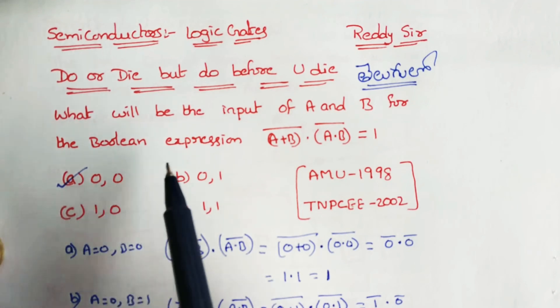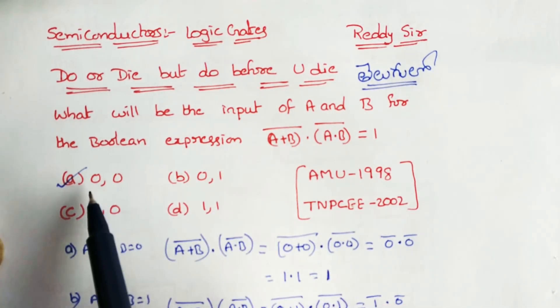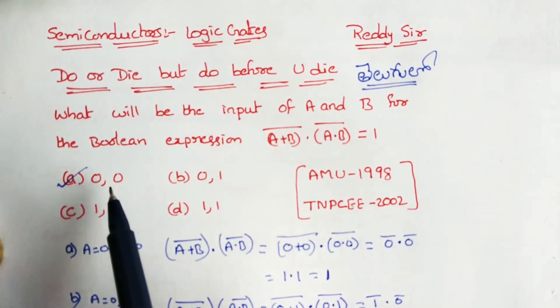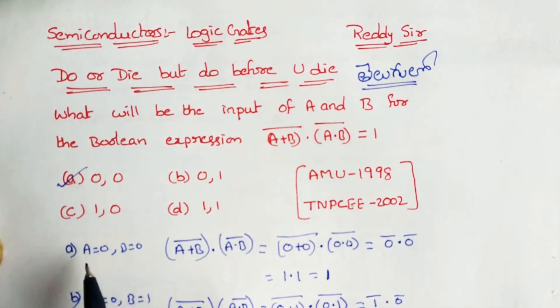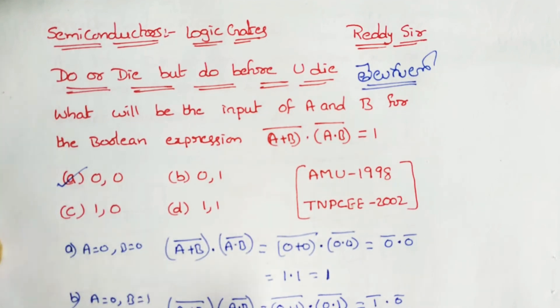Now, first we will discuss A and B. Option A: A is equal to 0 and B is equal to 0.